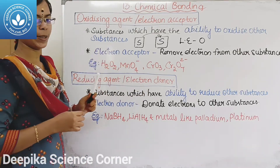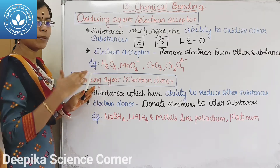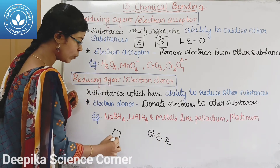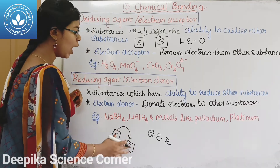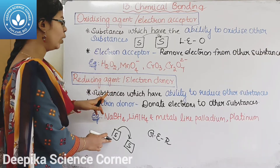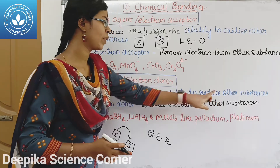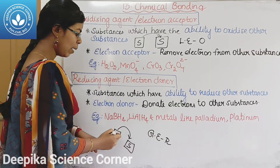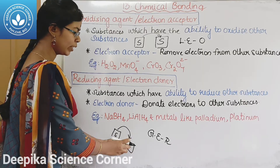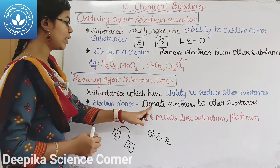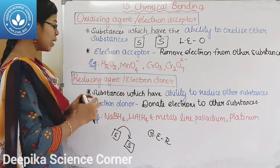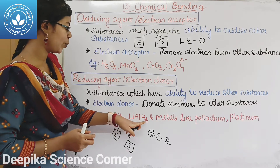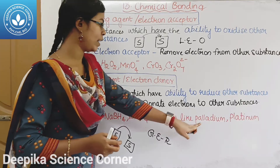Next is the reducing agent. In reduction, there will be a gain of electron. A reducing agent is a substance that has the ability to reduce other substances. It is called the electron donor — it donates electrons to other substances. Examples include NaBH4 (sodium borohydride), LiAlH4 (lithium aluminium hydride), and metals like palladium and platinum.